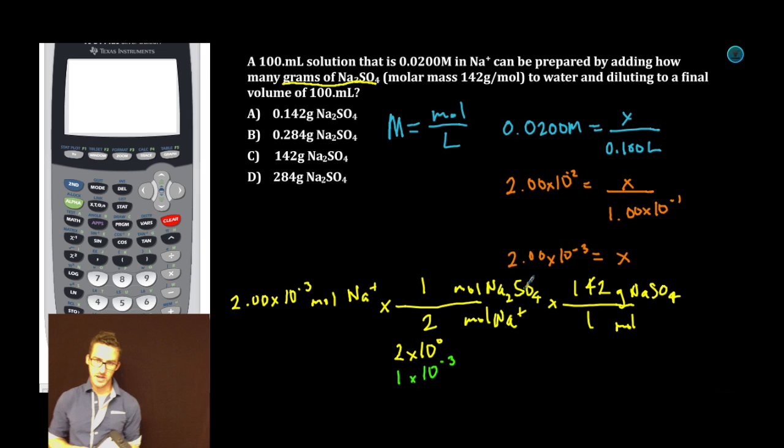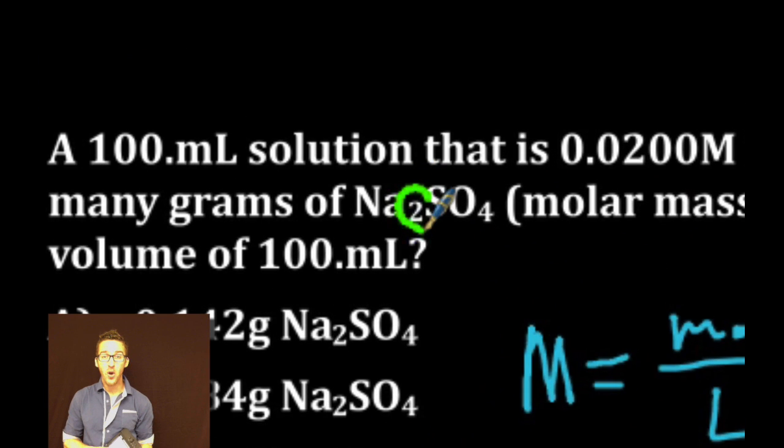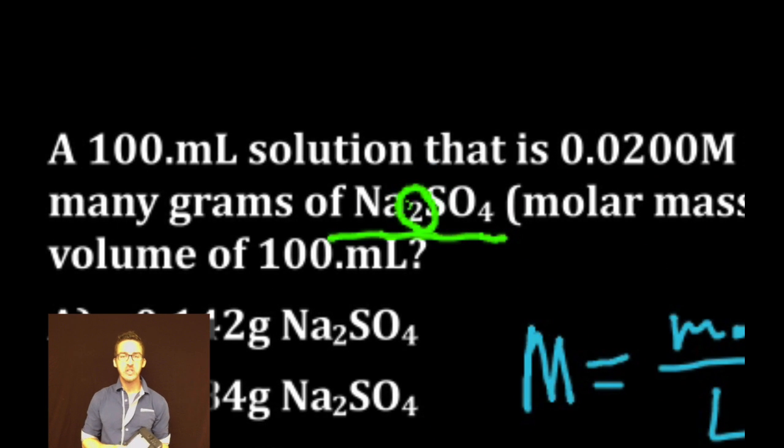So the moles of sodium sulfate that I need is half the number of moles of sodium ion, which makes sense because however much sodium sulfate I put into a solution, I'm going to get twice the number of sodium ions. Why? Because nomenclature. That's why. For every one of these, there's two sodiums.